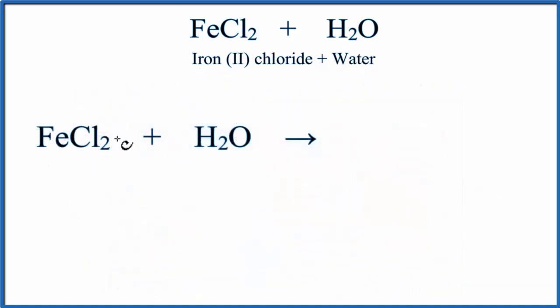So FeCl2, that is a solid, and water is a liquid. So we put FeCl2 in water, and we know because it's soluble, it's going to dissolve, and it'll break apart into its ions, Fe2+ and Cl-. So let's write that.